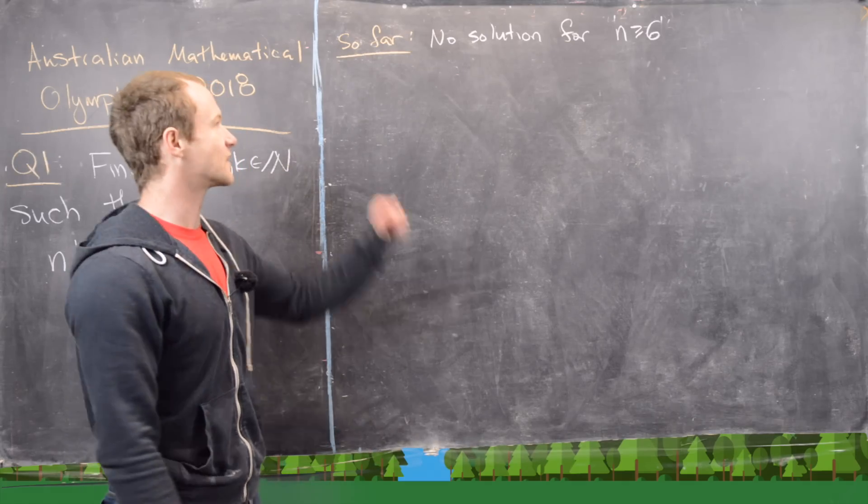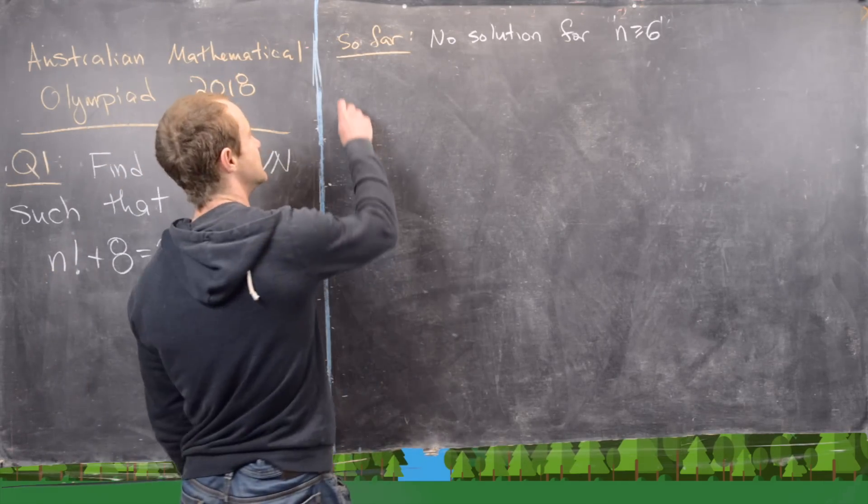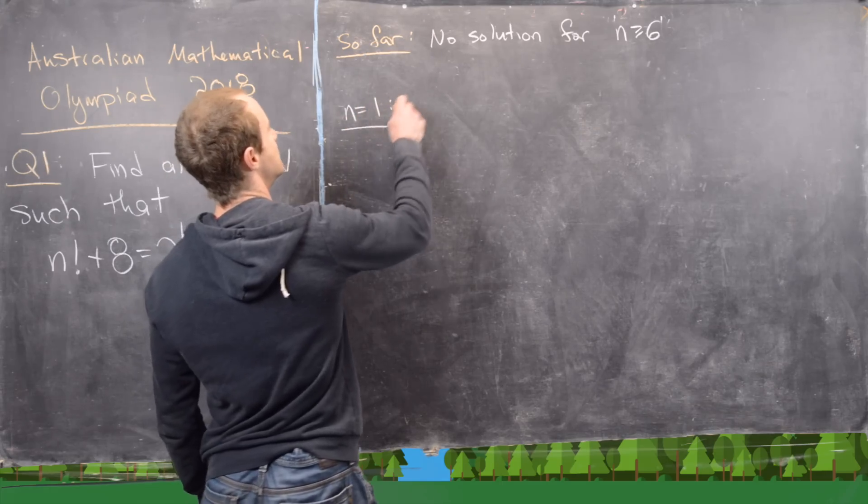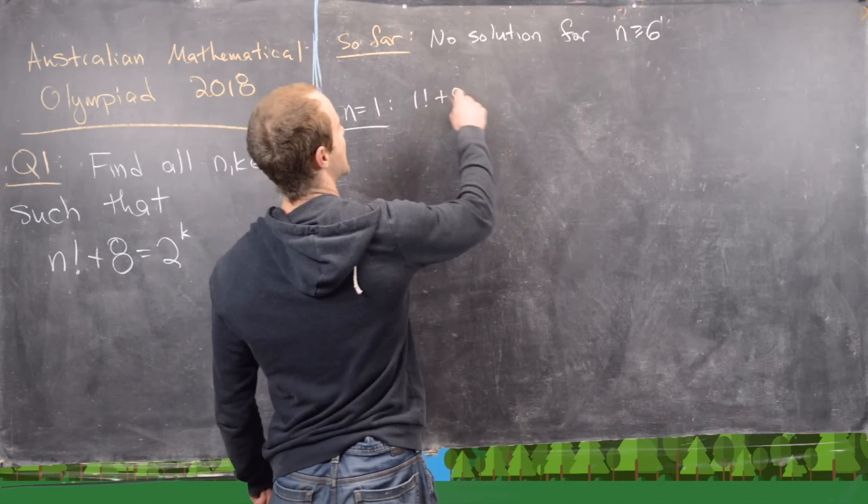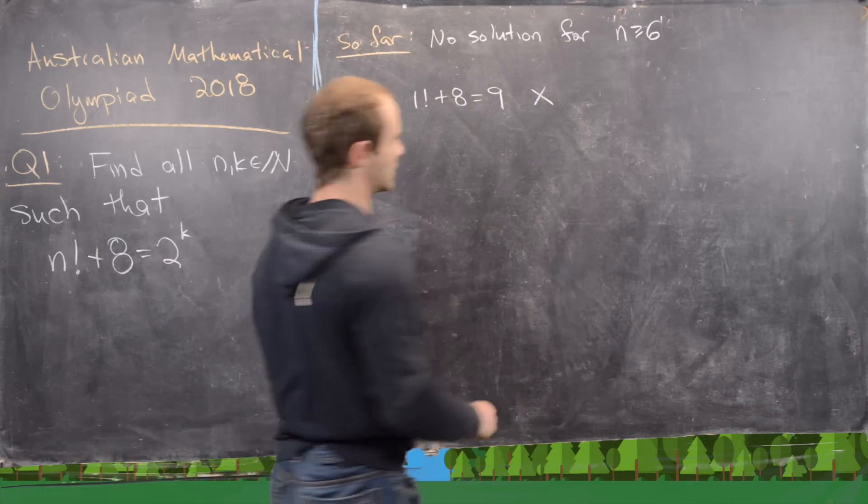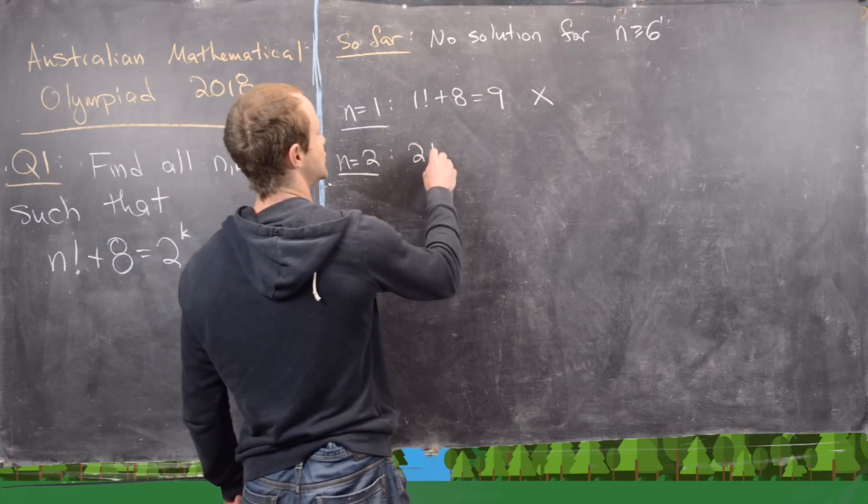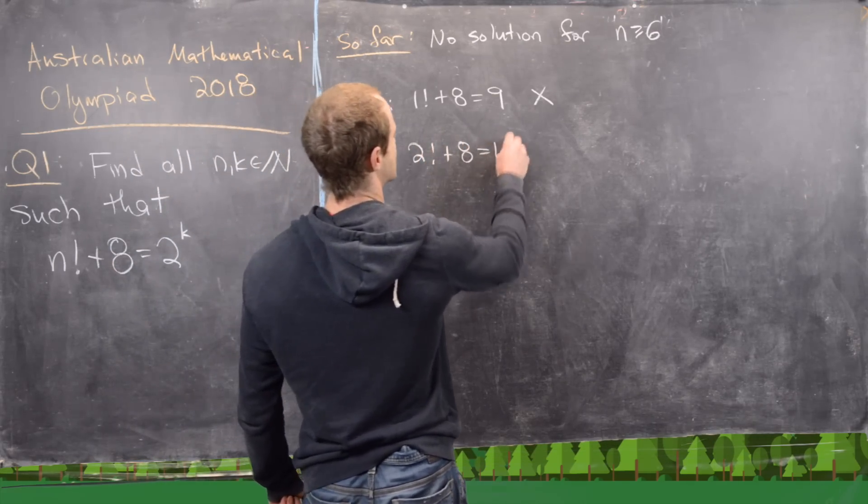We just got done proving that there's no solution for n bigger than or equal to 6. Now we need to check the first five cases. So let's look at n equals 1. We have 1 factorial plus 8, which is equal to 9. So that is not a power of 2. Let's look at n equals 2. That's 2 factorial plus 8, which is equal to 10.